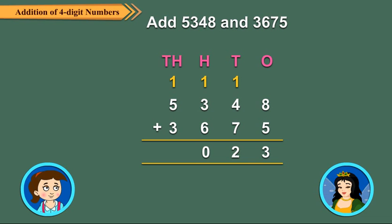Adding thousands. 1 thousand carried plus 5 thousands plus 3 thousands is equal to 9 thousands. Write 9 under the thousands column. So 5348 plus 3675 is equal to 9023. Did you get this Neha? Yes.